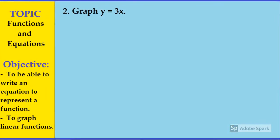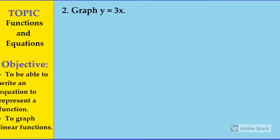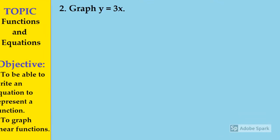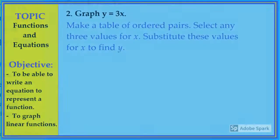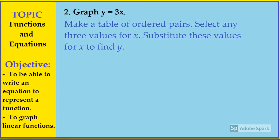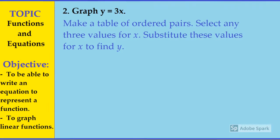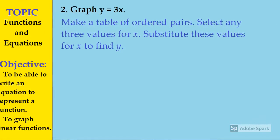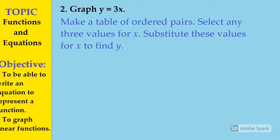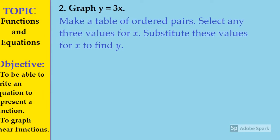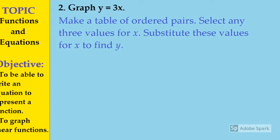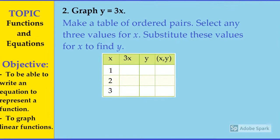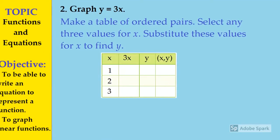Now let us consider this question: graph y when it is equal to 3x. What are we going to do? It's the same step — make a table of ordered pairs, select any three values of x, and substitute these values for x to find out y. Let us put the table this way so that it will be easy for you.